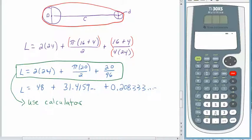Ready? Here we go. 2 times 24. Close the parentheses. Plus. Pi times 20. Right. That's the numerator. Divided by the denominator is 2. Plus. 20 divided by 96. And here we go. There. That looks better.